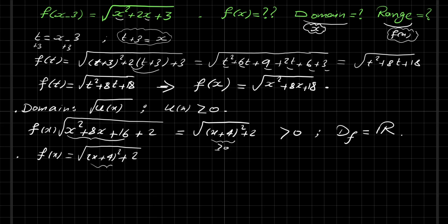f(x) has minimum at negative 4. So f of negative 4 equals square root of negative 4 plus 4 which is 0, plus 2, equals square root of 2. And at plus infinity, this goes to plus infinity. So the range is square root of 2 to plus infinity.